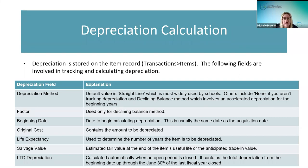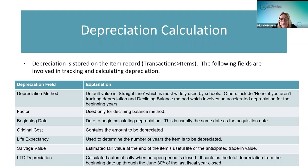The factor field is only used for declining balance methods. If your districts don't use declining balance at all and use straight line instead, there's never a need to put anything in the factor field. The beginning date is the date to begin calculating depreciation.